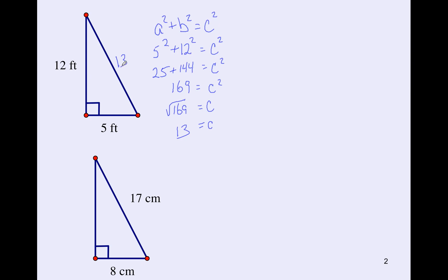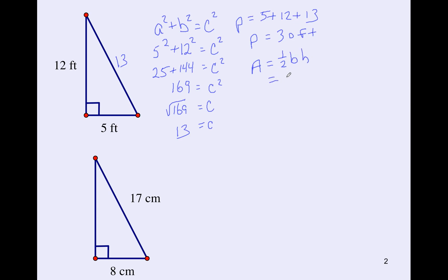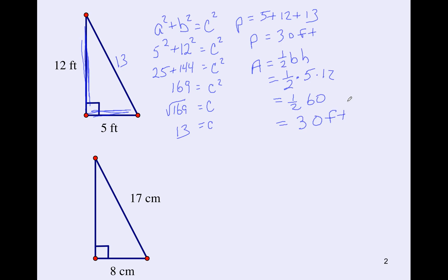Now that you know all three sides of the triangle, you can find the perimeter by just adding up the three sides. So the perimeter for this is going to be 30 feet. Now we're going to find the area of the triangle using our area formula — one half of the base times the height. The base and the height are the two sides that meet at 90 degrees, so it's going to be 5 and 12. One half of 5 times 12 is one half of 60, so the area is 30 feet squared.